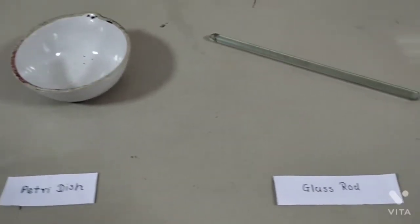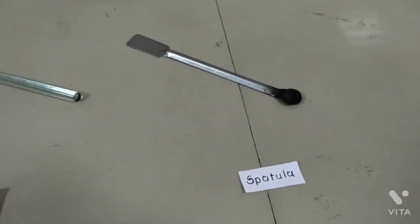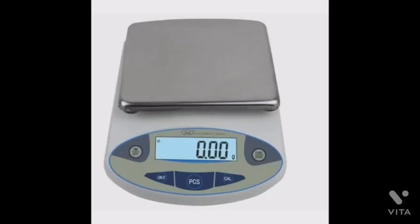Let's see the apparatus used in the preparation. We are going to use petri dish or mortar, glass rod and spatula. And for weighing of chemicals we are going to use a weighing balance.